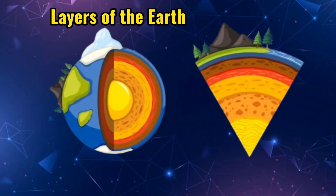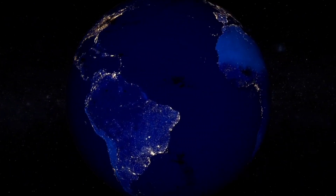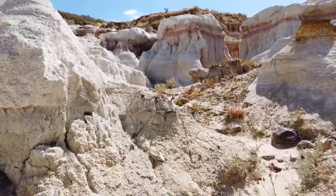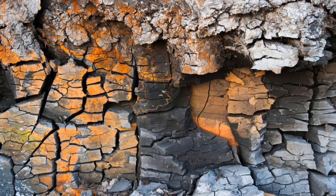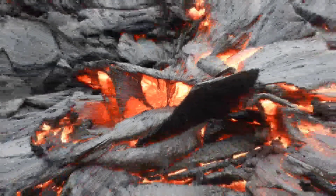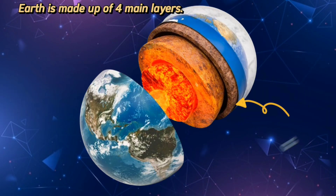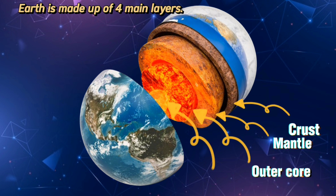Have you ever thought about what the earth looks like beneath the surface? It is really interesting to study the earth from the surface to the core. The earth is not simply a giant ball made up of dirt, rocks, and minerals. Amazingly, there is a ton more happening just below the surface all the way down to the earth's core. The earth is made up of four main layers: the outermost layer is the crust, next is the mantle, outer core, and inner core.